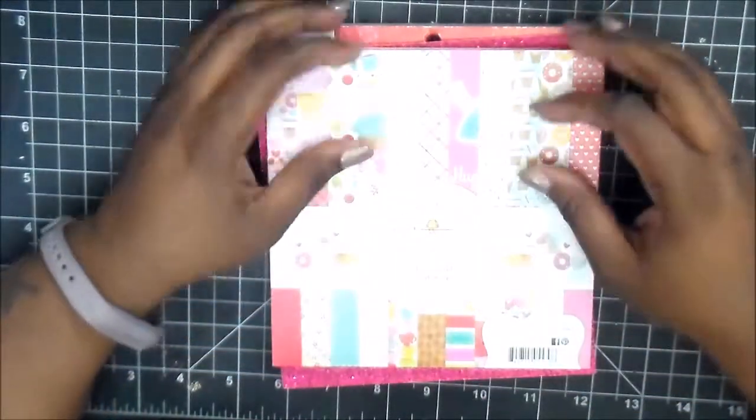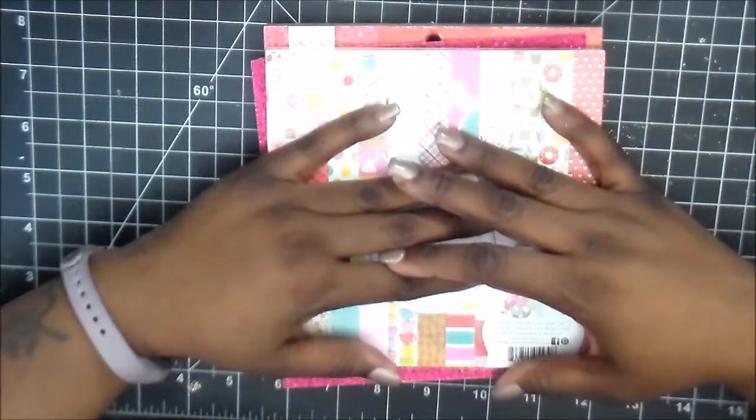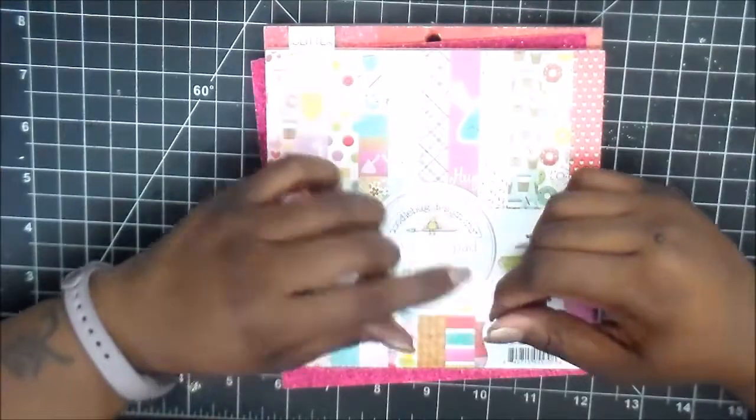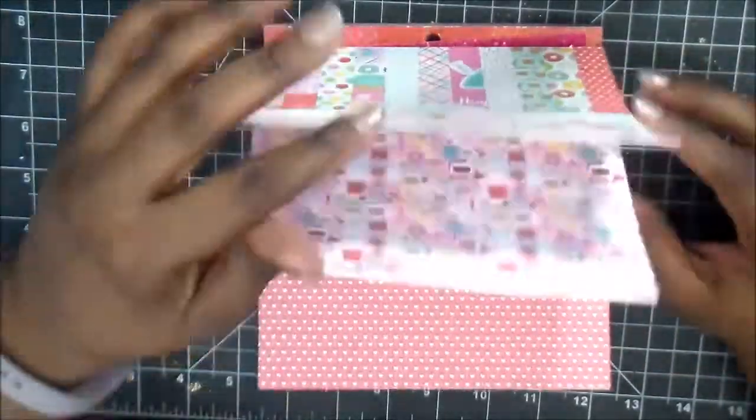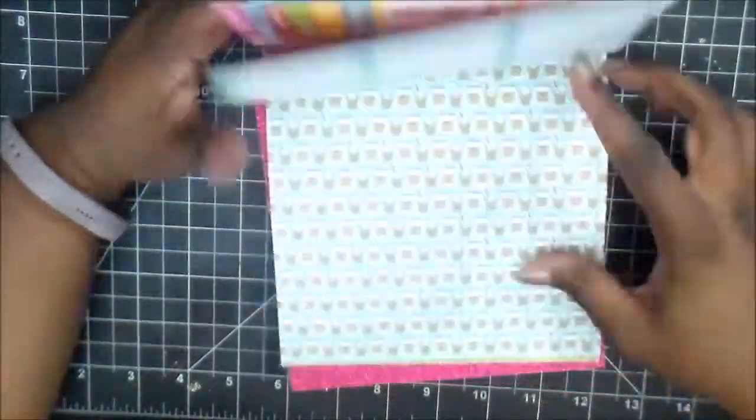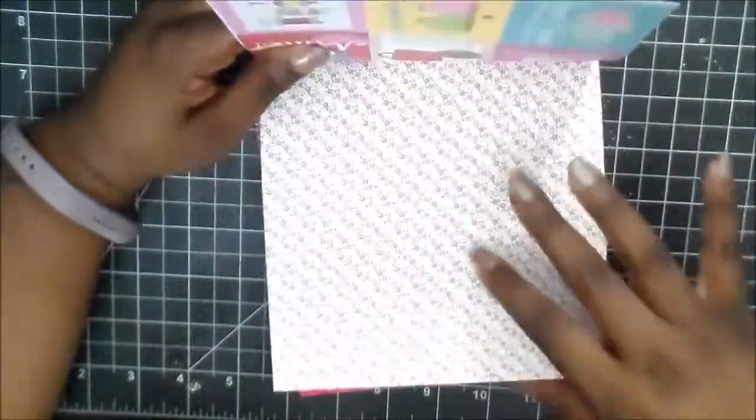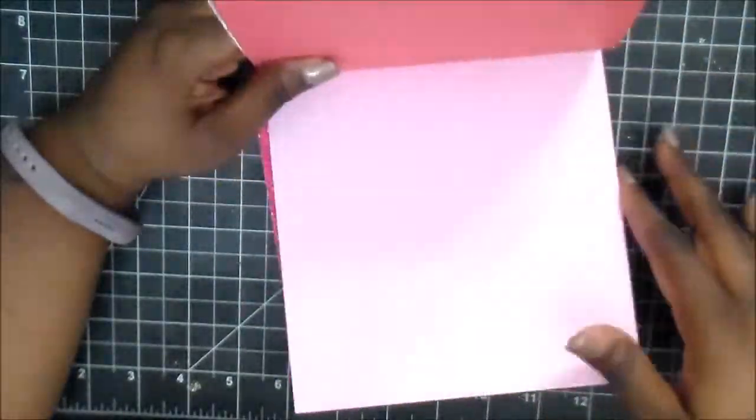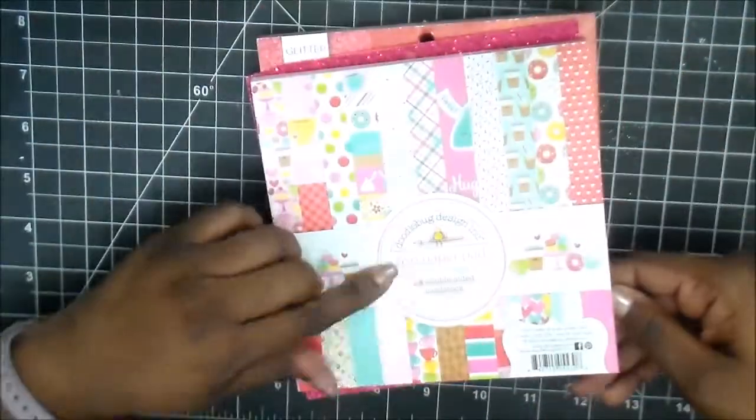It's taking a 6x6 sheet of paper and making four cards. So I'm going to be using the Doodle Bugs Cream and Sugar paper pack. I'm just going to flip through it here real quick just to show you some of the papers, and then it starts over again.